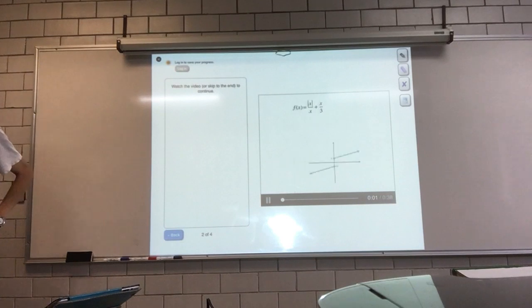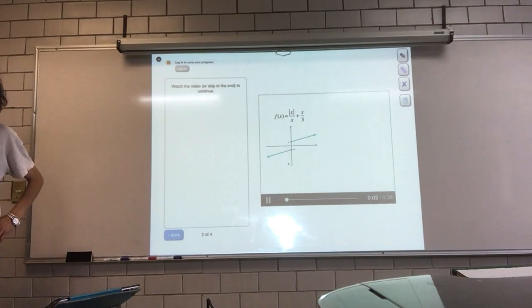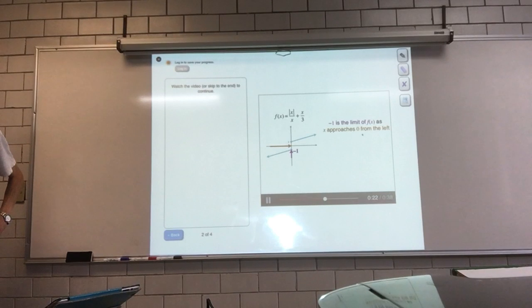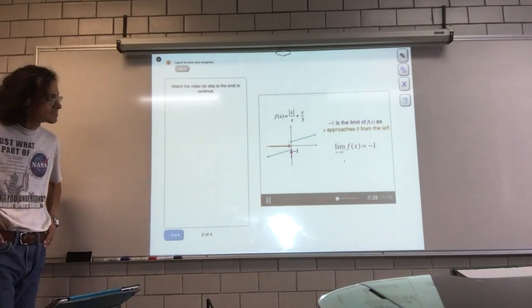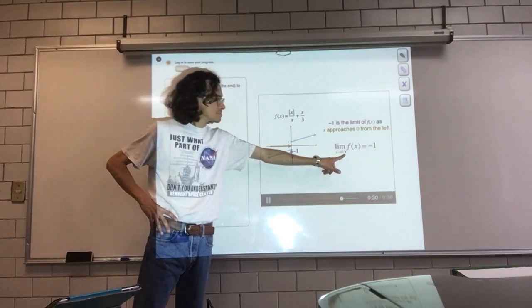The only graph that could possibly be this function here is d. Right, it was this graph over here. Now let's take a closer look at how this function behaves around x equals 0. Notice that as x gets close to 0 when approaching from the left or negative side, f of x gets close to minus 1. When that happens, we say that minus 1 is the limit of f of x as x approaches 0 from the left. To emphasize that we're only letting x approach from the left or negative side, we put a little minus sign above the 0 here.